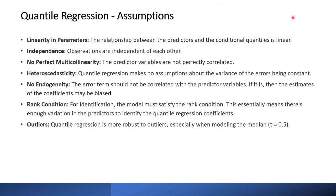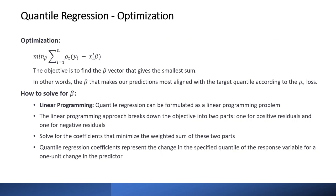The assumptions of quantile regression: linearity in parameters — the relationship between predictors and conditional quantiles is linear, similar to OLS; independence — observations are independent; no perfect multicollinearity — predictor variables are not perfectly correlated. Unlike OLS, quantile regression makes no assumption about constant variance of the errors. The error term should not be correlated with predictor variables, otherwise coefficient estimates may be biased. The model must satisfy the rank condition to ensure enough variation in predictors to identify the quantile regression coefficients. Quantile regression is more robust to outliers than OLS, especially when modeling the median (tau = 0.5).